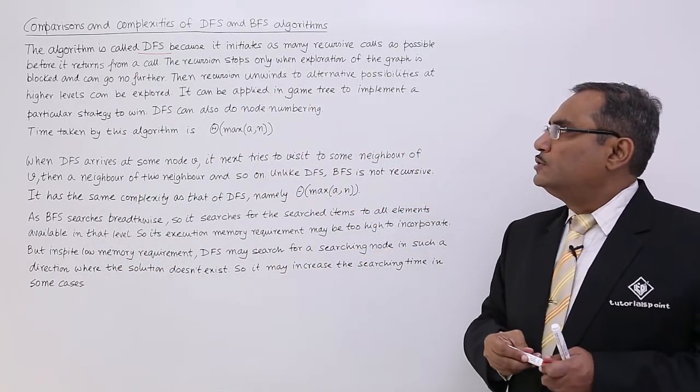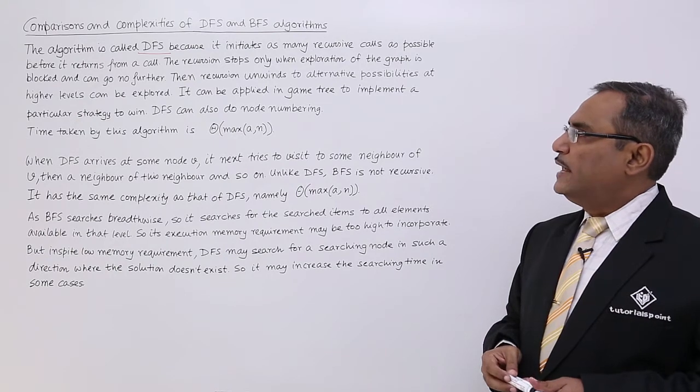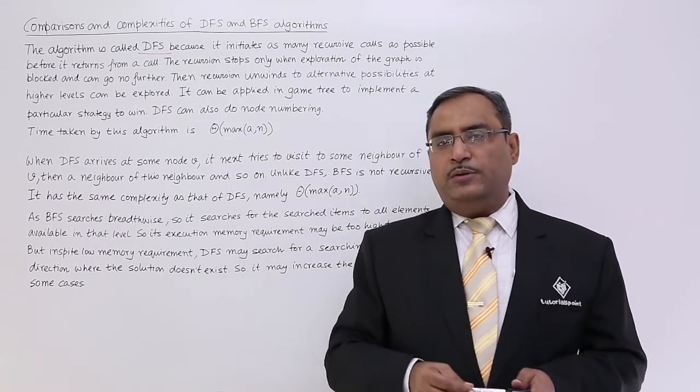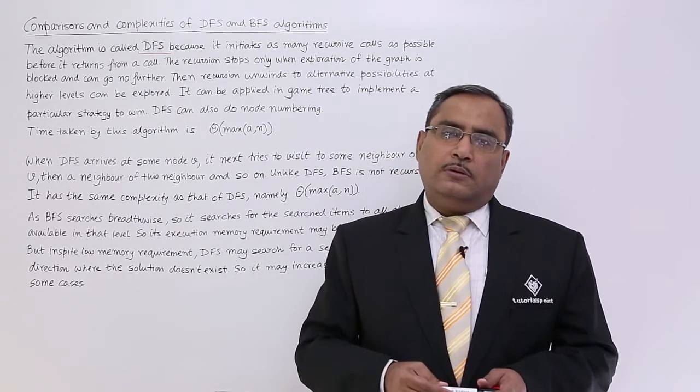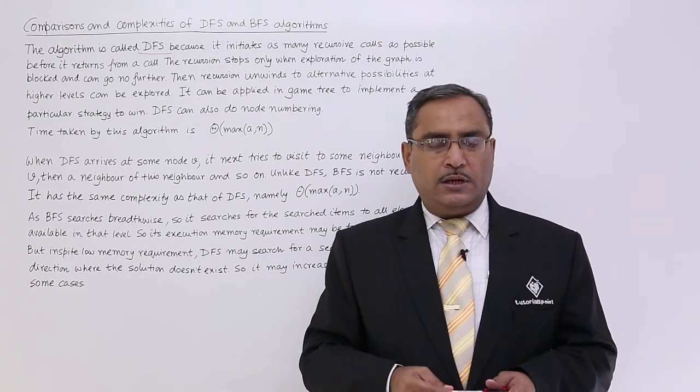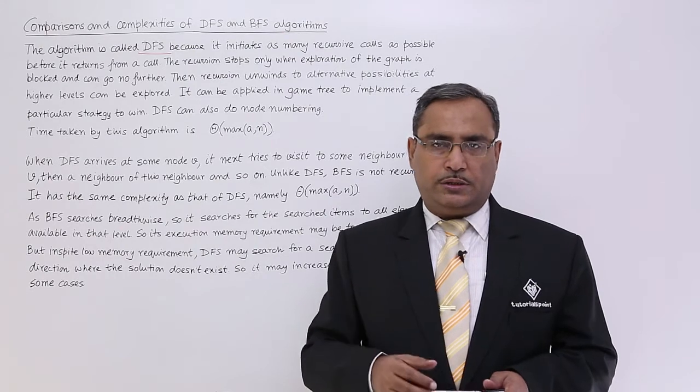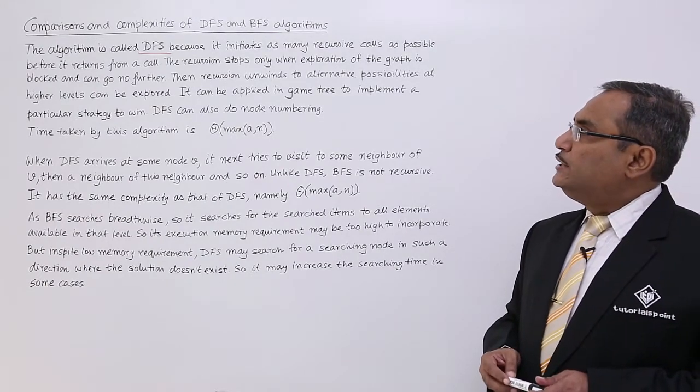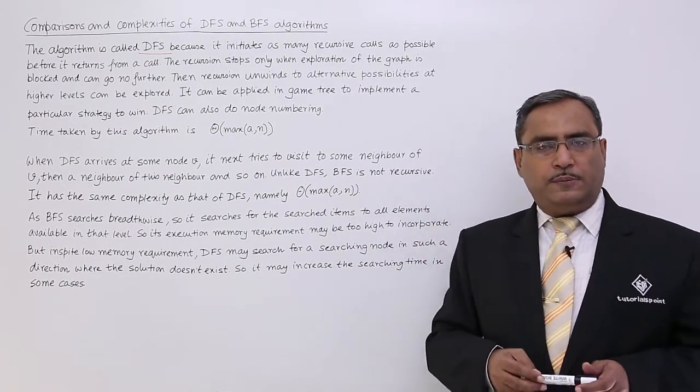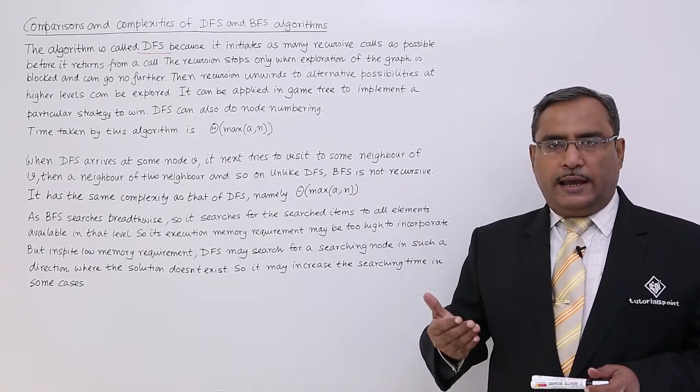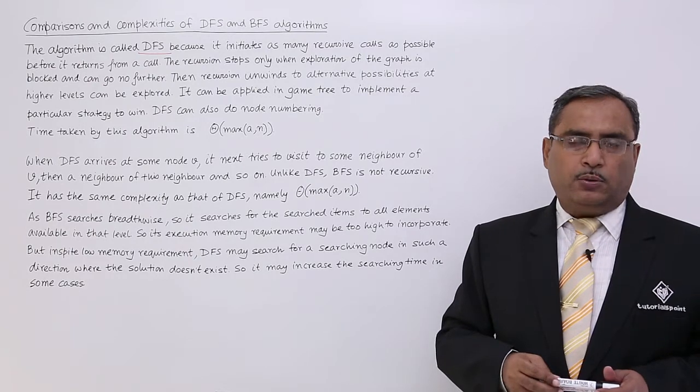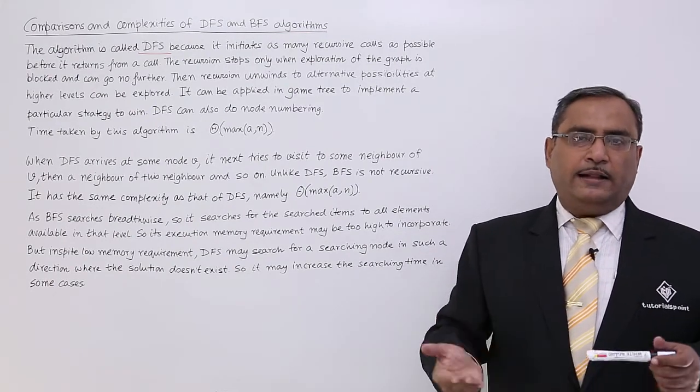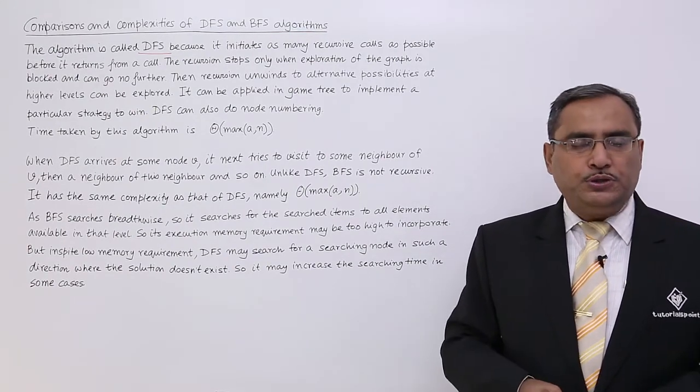The algorithm is called DFS because it initiates as many recursive calls as possible before it returns from a call. Please watch our previous videos where we have discussed these BFS and DFS algorithms with proper explanation through examples. Those videos are in continuation, so please watch them so that you can have better understanding. In case of DFS algorithms, we will be going for the recursive calls as much as possible to explore. But when the exploration will be blocked, there will be no other adjacent node to get explored, then you shall retrace back and go to the higher level for other opportunities and possibilities.